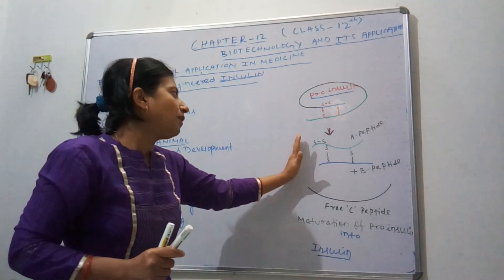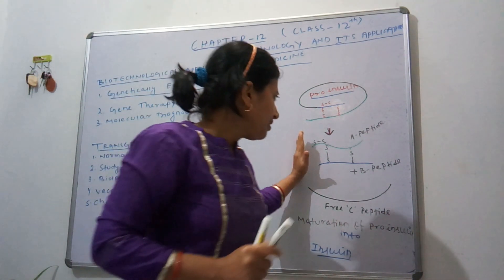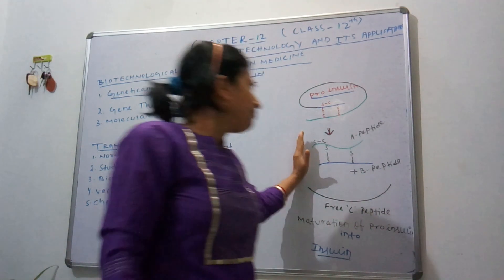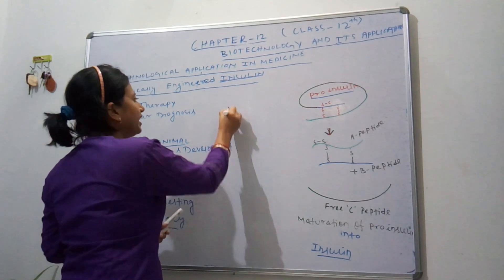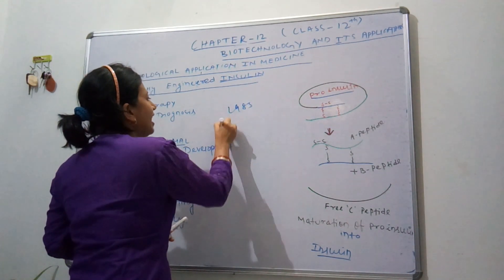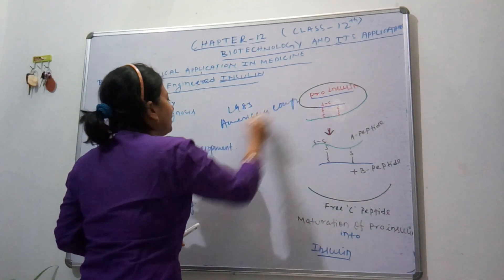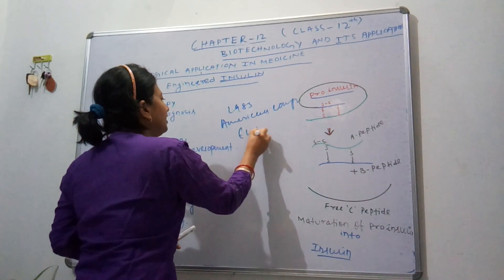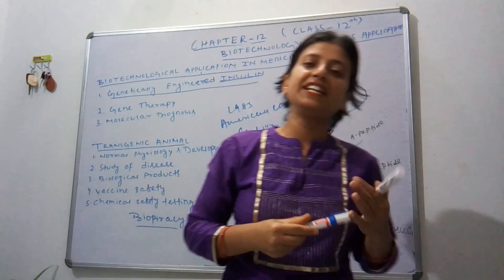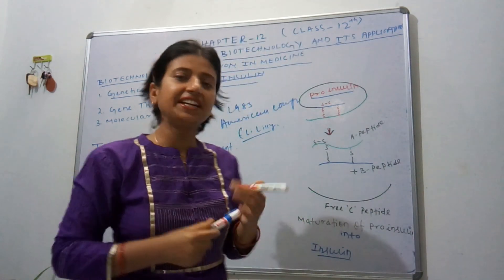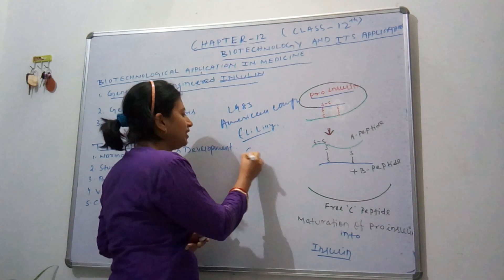To perform this same activity, nowadays biotechnology has developed many techniques. In the year 1983, the American company Eli Lilly first invented or made genetically engineered insulin.